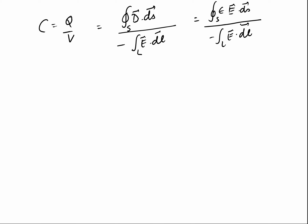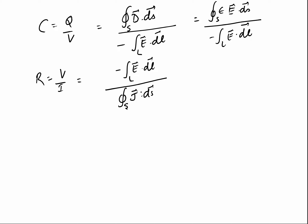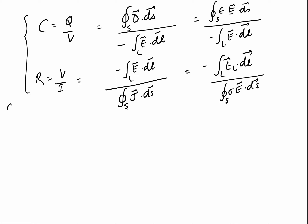For resistance, R = V/I, where V is simply minus E·dl over the length l, and I is J·dS over the closed surface S, which equals sigma·E·dS over the closed surface S. If both quantities are calculated over the same surface S and length l,